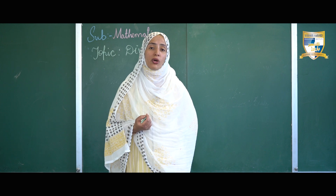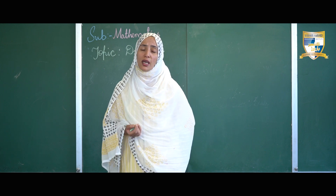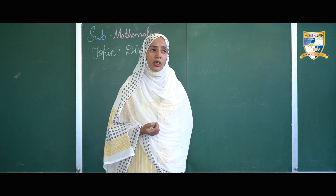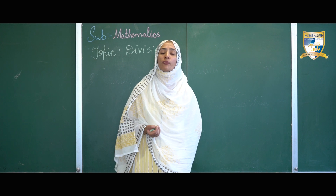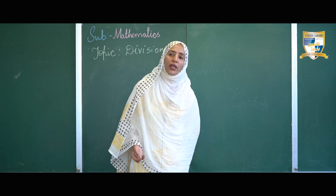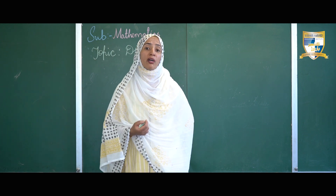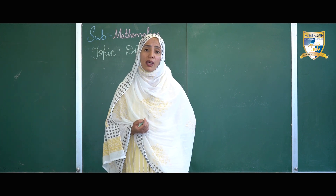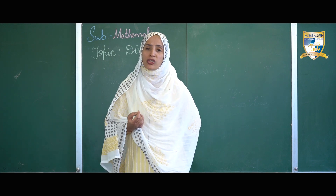Suppose I have 20 chocolates to be divided between two persons. What will be the share of each person? Very simple — each person will get 10 chocolates. Now, what if the same number of chocolates is to be divided among five groups? Each group will have four chocolates.